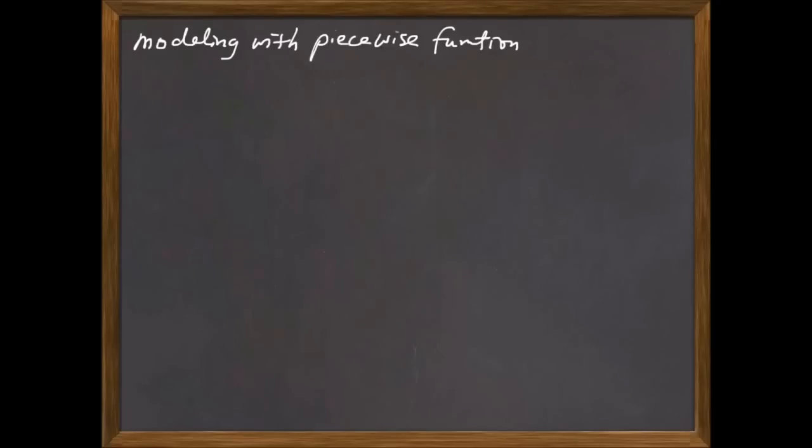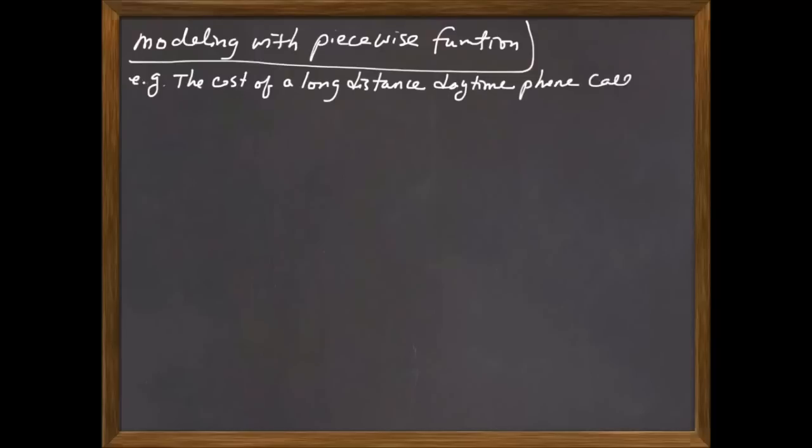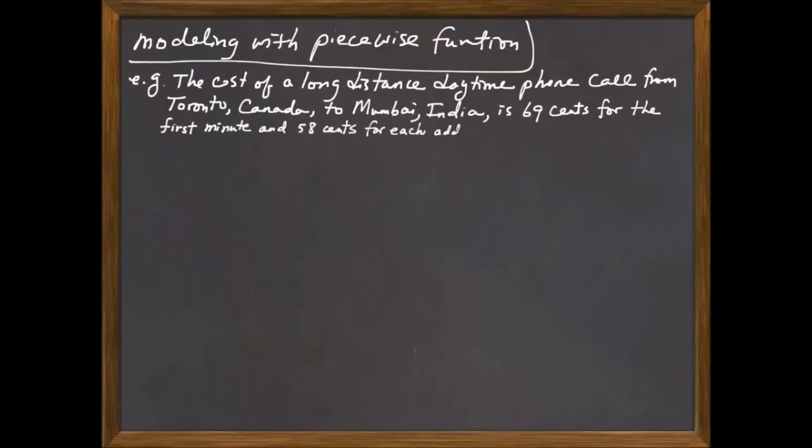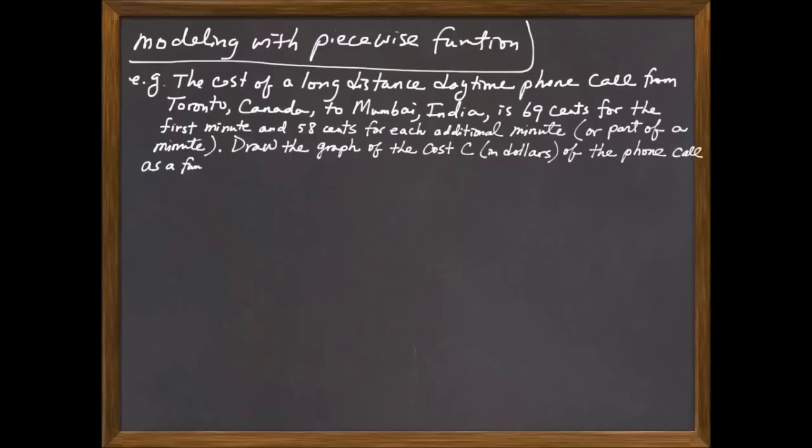So to recap, the general strategy to figure out a function description for piecewise graphs is to first identify points where splitting happens and to figure out the domain for each piece first and then go backwards to figure out the function description. Next, let's look at how we model with piecewise function. We'll do this through an example here. The cost of a long-distance daytime phone call from Toronto, Canada to Mumbai, India is 69 cents for the first minute and 58 cents for each additional minute or part of a minute.